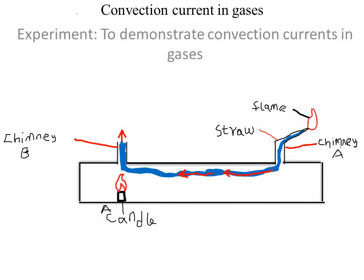Lastly, we look at another experiment demonstrating convectional currents, this time in gases. The apparatus required is a box with two chimneys and a transparent front, a candle to heat the air, and a smoldering straw — burned on one side so that it produces smoke. We may also need a piece of cloth or paper.